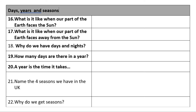Our learning objectives: to know what it's like when our part of the planet faces the sun, and when it faces away from the sun. We're going to explain why we have days and nights, define how long a year is, name the four seasons, and explain why we get those seasons.